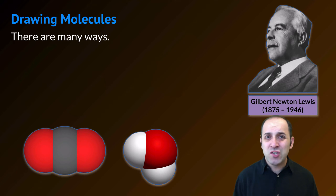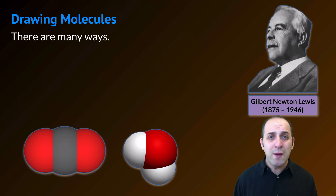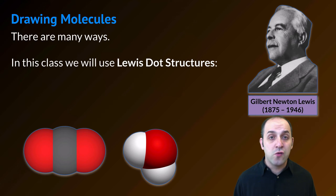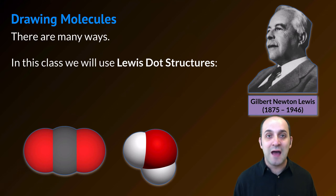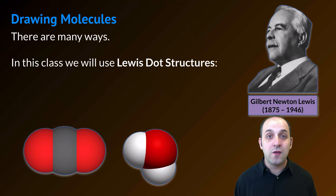There are actually a whole bunch of different ways to draw molecules in chemistry. When we want to draw molecules we are going to use Lewis dot structures. This is going to take the rules that we talked about back when we talked about Lewis dot diagrams of atoms and we're going to apply that to covalent structures.